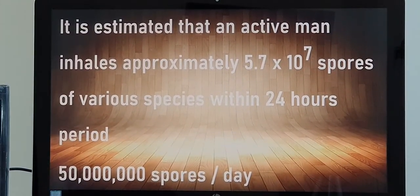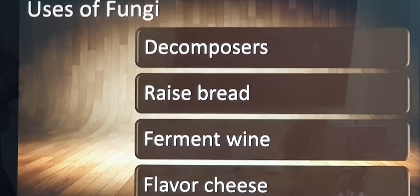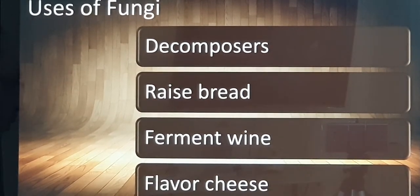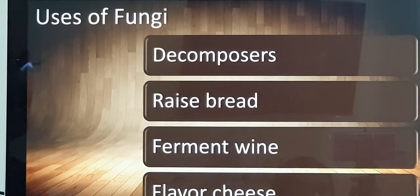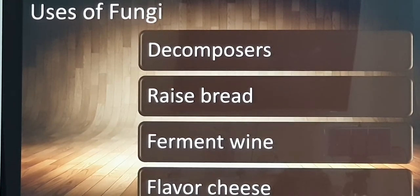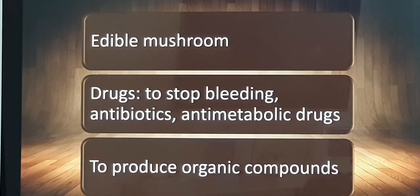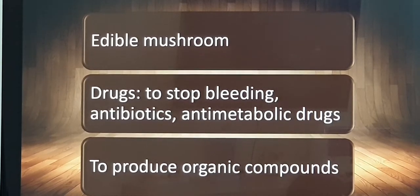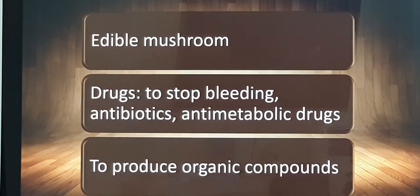Fungus has got so many important uses in our life. Most importantly, these are decomposers along with bacteria. All the organic food which we dispose of — after a few days, we find that it is completely gone because of the decomposing action of fungus and bacteria. Not only that, it helps us to raise bread, ferment wine, flavor cheese. And most importantly, some drugs — like drugs which stop external bleeding — are made from fungus. The penicillin group of drugs is made from fungus Penicillium, and some anti-metabolic, anti-cancer drugs are also made from fungus.